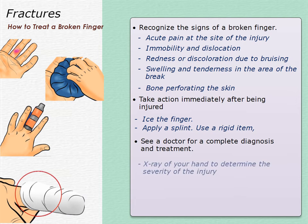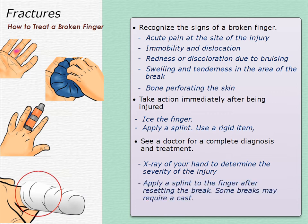See a doctor for a complete diagnosis and treatment. A doctor will want to take an x-ray of your hand to determine the severity of the injury and the proper course of treatment. If the fracture is more serious, a doctor will apply a splint to the finger after resetting the break. Some breaks may require a cast.